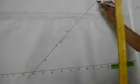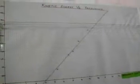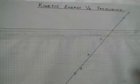We will use this graph to work out the threshold wavelength. The threshold wavelength is the cutoff frequency required for an electron to get ejected from the metal surface.